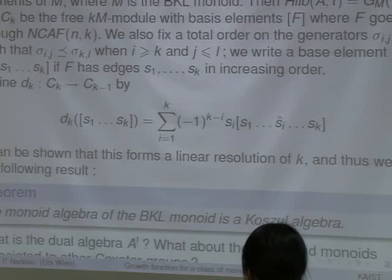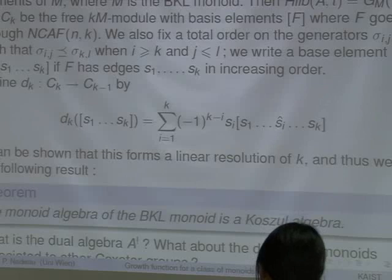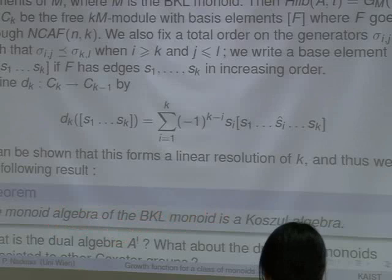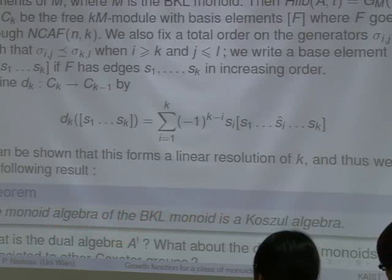This proves that the monoid algebra of the Birman-Ko-Lee monoid is a Koszul algebra. We would like to know more: what is the dual algebra in this case? We know it's a finite-dimensional algebra but don't know its structure. We can do the same for type B — we get the same result — but for type D and in general for any Coxeter system, showing that any dual braid monoid algebra is a Koszul algebra is our conjecture. Thanks for your attention.